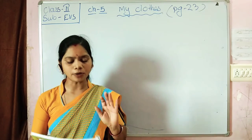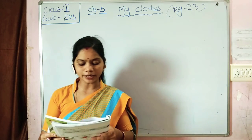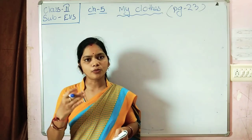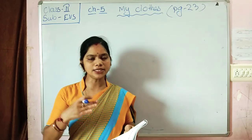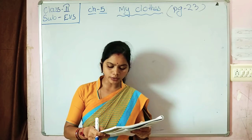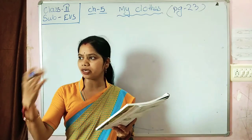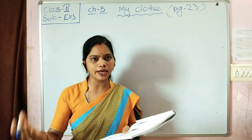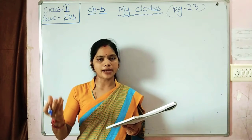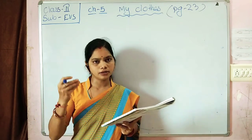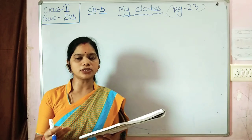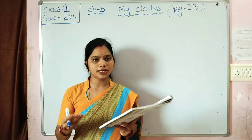We wear different types of clothes in different seasons — summer, rain, and winter. We wear a raincoat when we go out in the rain, because it protects us from rain and keeps us dry. We wear cotton clothes in summer because they keep us cool.